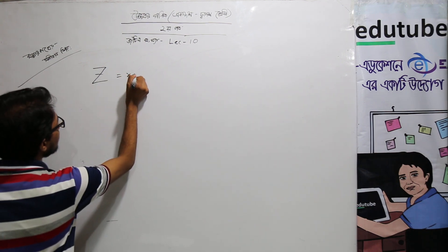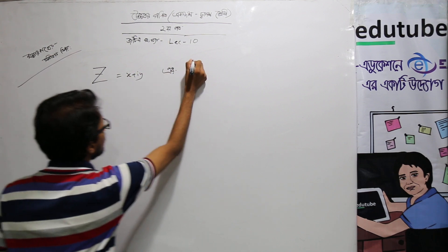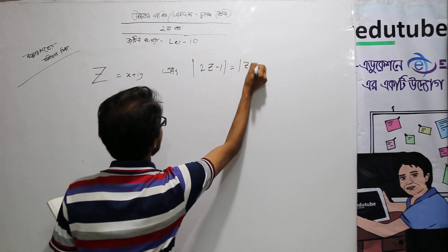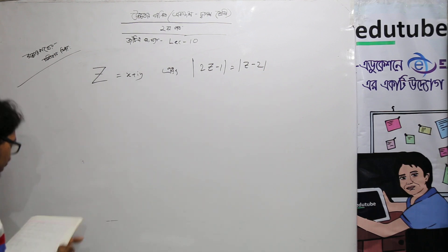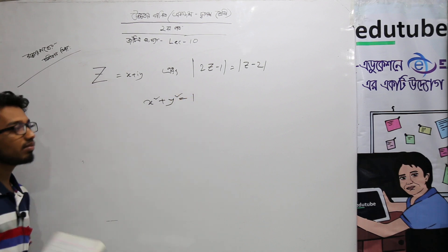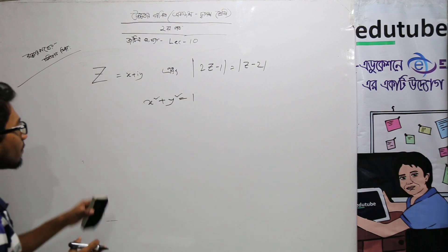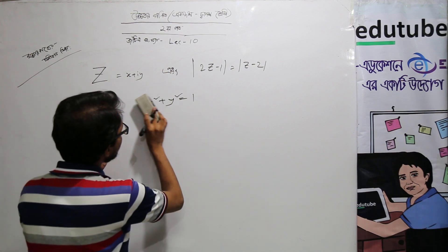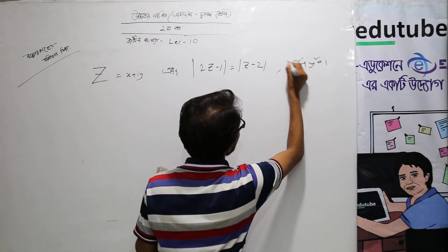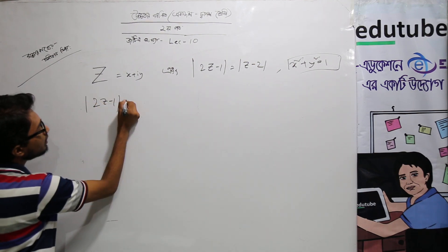Now, if z equals x plus iy and 2z minus 1 equals z minus 2, we need to prove that x squared plus y squared equals 1. I will try this proof. The condition is: |2z - 1| equals |z - 2|.